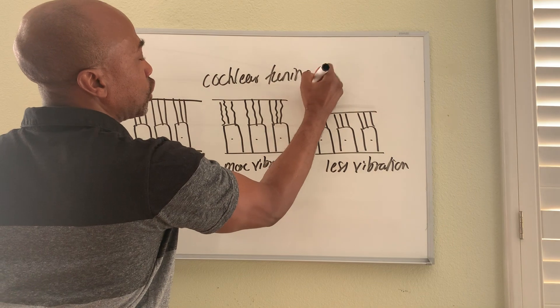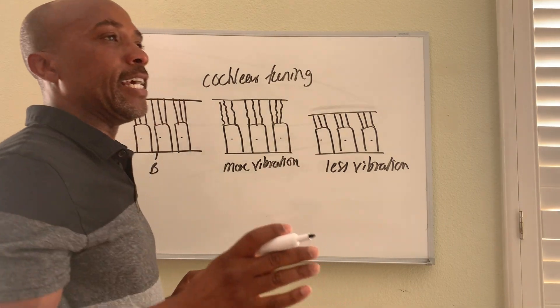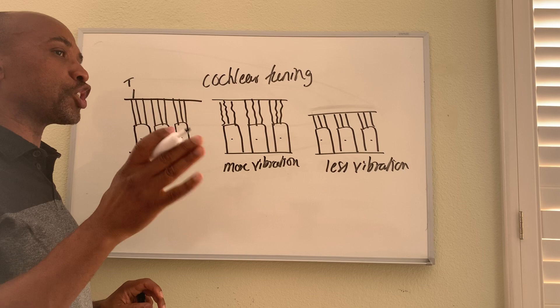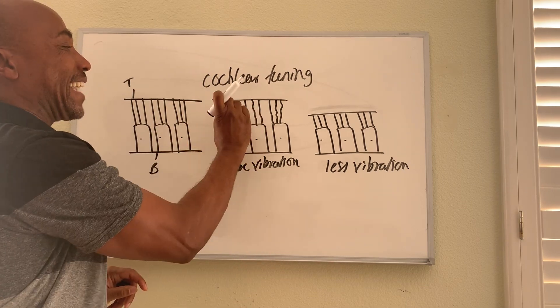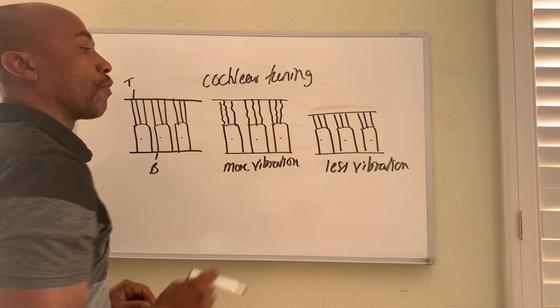Where you try to make sure the cochlea is responsive where it should be in some areas and less responsive where it should not be, based on how tight these strings are on the outer hair cells.